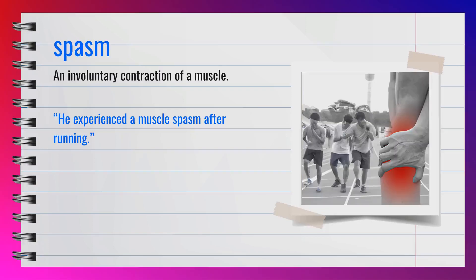The word spasm is a noun, spelled S-P-A-S-M. It refers to an involuntary contraction of a muscle. Another word for spasm could be cramp. For example, he experienced a muscle spasm after running. A spasm is a sudden involuntary muscle contraction.